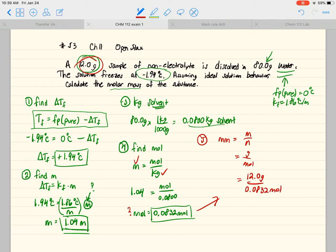You literally just find that fraction: 12 divided by 0.0832, and I get 144 grams per mole.